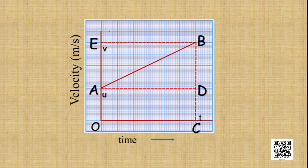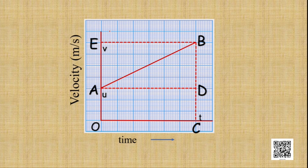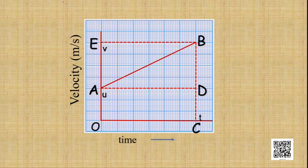We will represent this equation of time and velocity. For that, let us draw a parallel AD to OC, which is our time axis. From the graph, BC represents the final velocity, OA represents the initial velocity, and OC and AD represent the time interval. Now, BC is equal to BD plus DC. Since OADC is a rectangle, OA is parallel to DC and OA equals DC. So in place of DC, we can write OA.